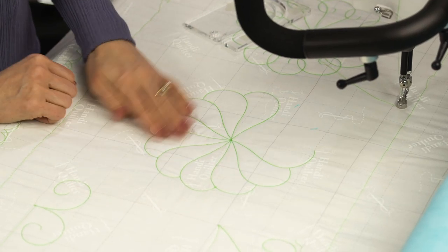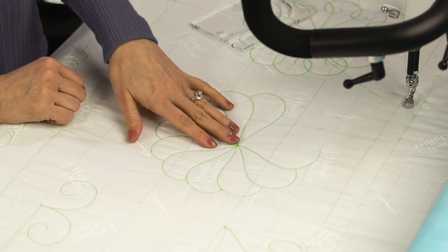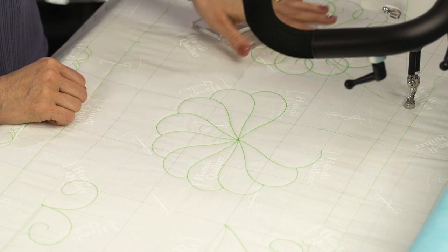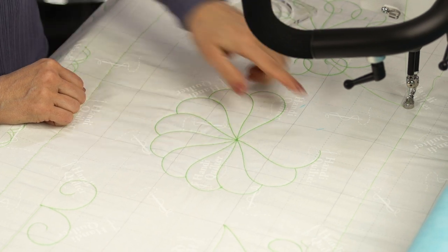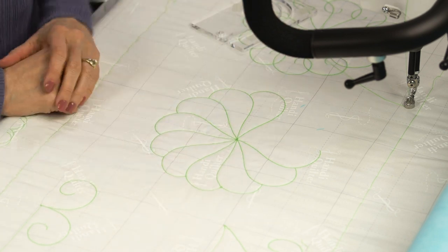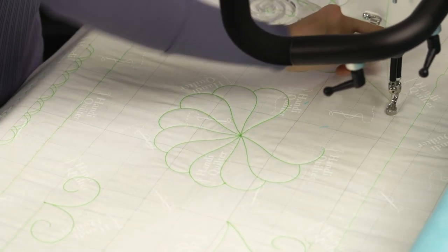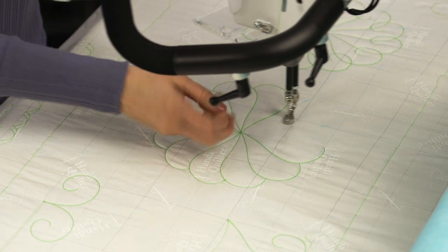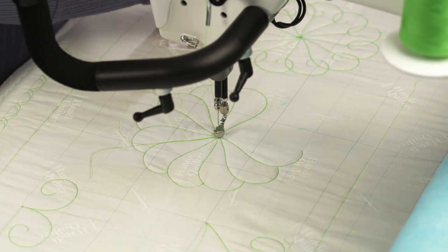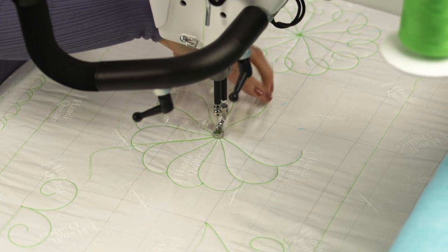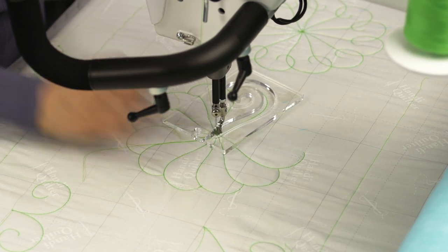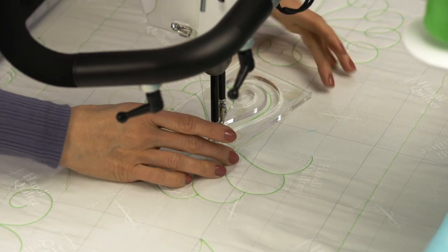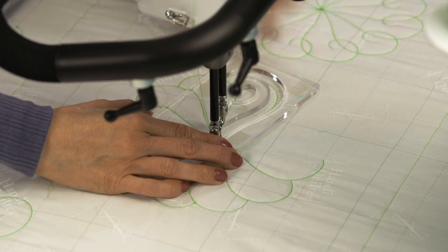Here's another feather wreath that is a similar concept to the previous design, where we've got a radiating grid with reference lines. Let me show you how we finish that one up, because it's a little bit different. Lifting up our needle, let's slide that ruler into place, and then I'm going to drop the needle so that I can position my ruler.